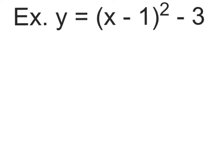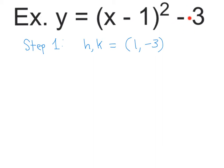First example: y equals (x minus 1) squared minus 3. Step 1 is identify the vertex. Since it is in vertex form, my h, k — which is my vertex — is (1, negative 3). I'm getting the 1 from the formula which says x minus h, so h is positive 1. And k is negative 3 because the formula says plus k and it's a minus 3. This is my vertex. Step 1 is done.